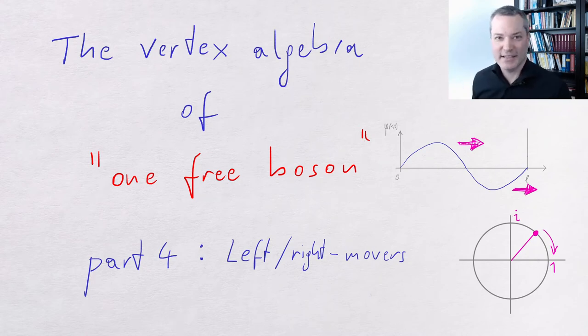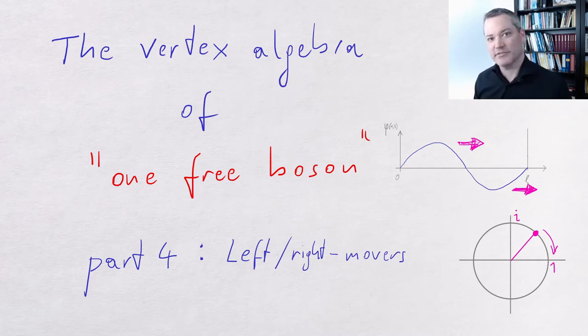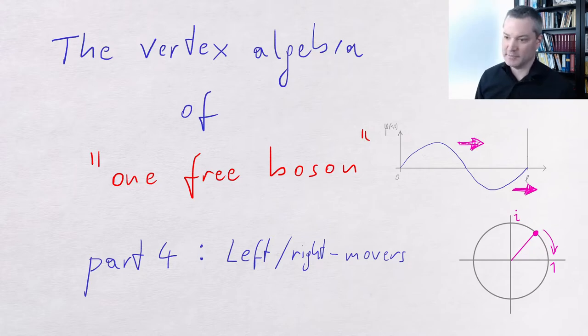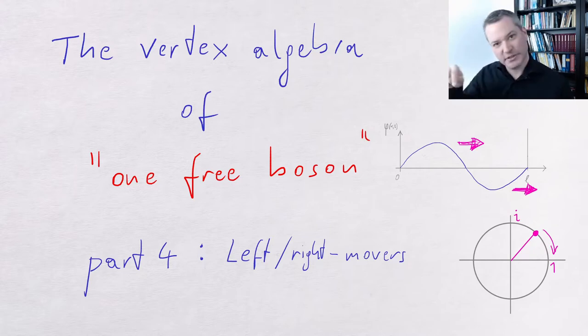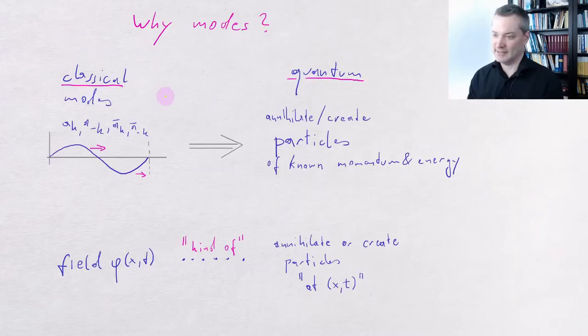Hello Internet! This is the fourth part in our series about the algebra of the free boson. This part is about left and right moving modes. You can find links to the previous parts in the description below.